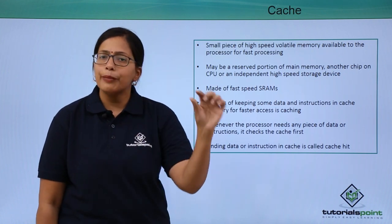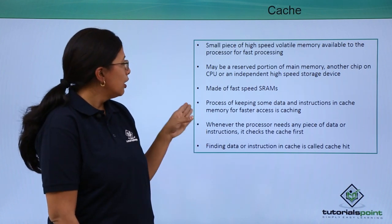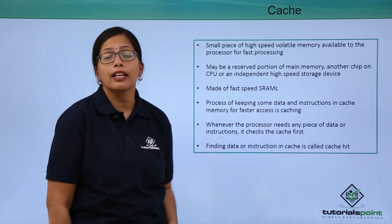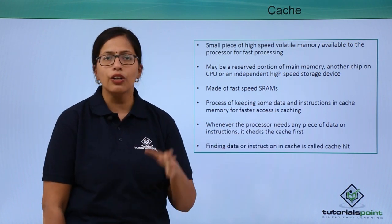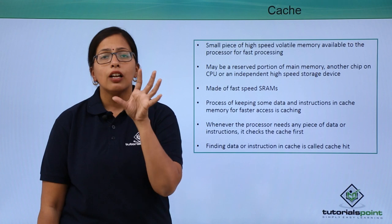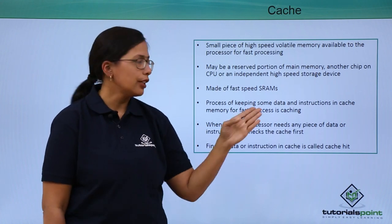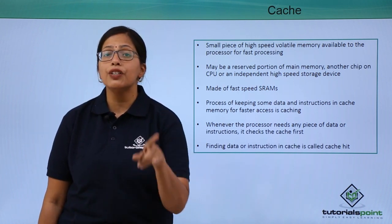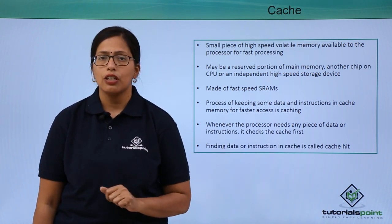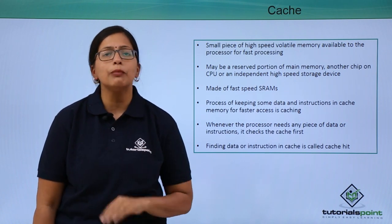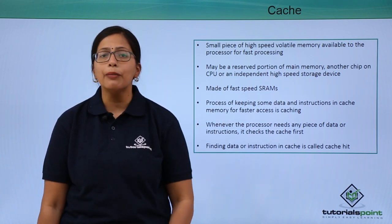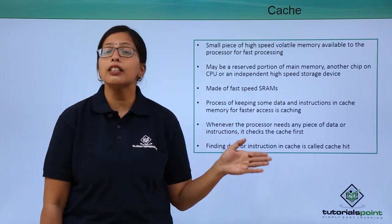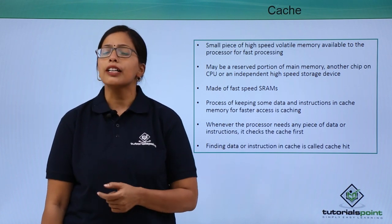So the data can be accessed quickly. The process of keeping some data and instructions in cache memory for faster access is called caching. Whenever the processor needs any piece of data or instruction, it will check the cache first. If it is not available in cache memory, then it will go to the RAM and check whether it is available. Finding data or instruction in the cache memory is called a cache hit.